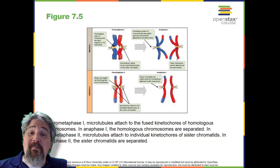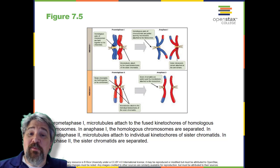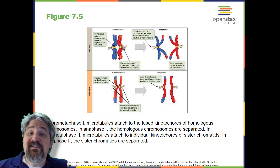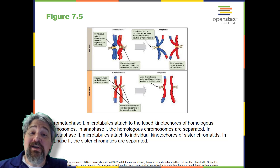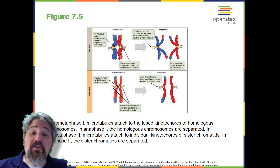In metaphase II, the sister chromatids are maximally condensed and aligned at the center of the cell. In anaphase II, the sister chromatids are pulled apart by the spindle fibers and move toward opposite poles. In telophase II, the chromosomes arrive at opposite poles and begin to decondense, and nuclear envelopes form around the chromosomes. Cytokinesis separates the two cells into four genetically unique haploid cells. The nuclei in the newly produced cells are both haploid and have only one copy of the single set of chromosomes, and the cells are genetically unique because of the random assortment of paternal and maternal homologues and because of recombination through crossover.